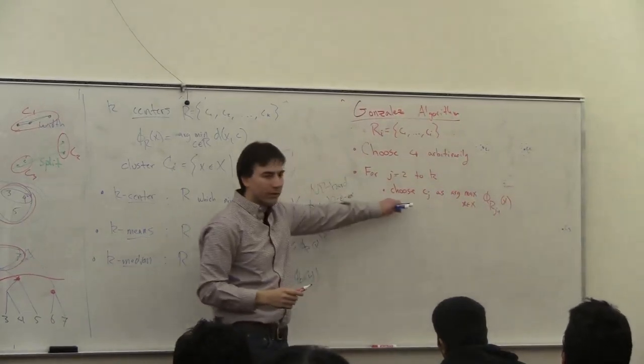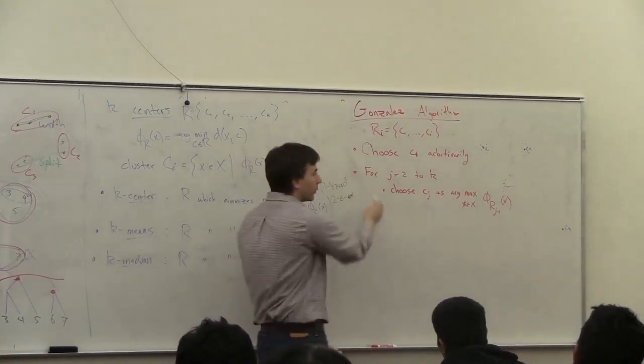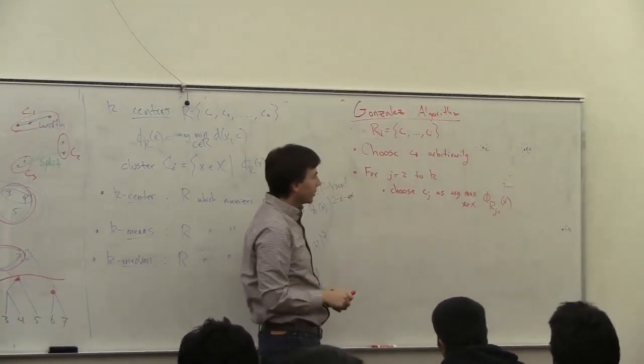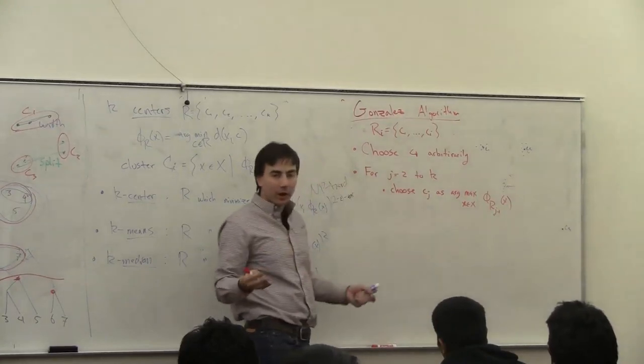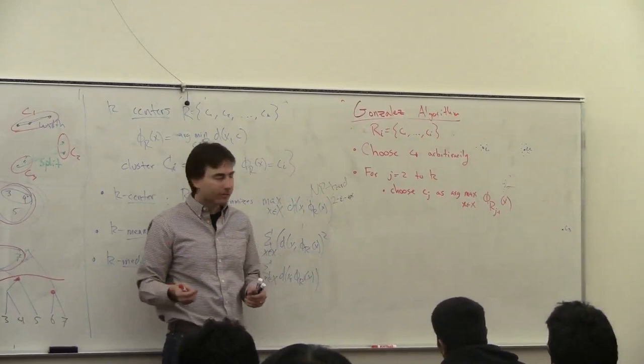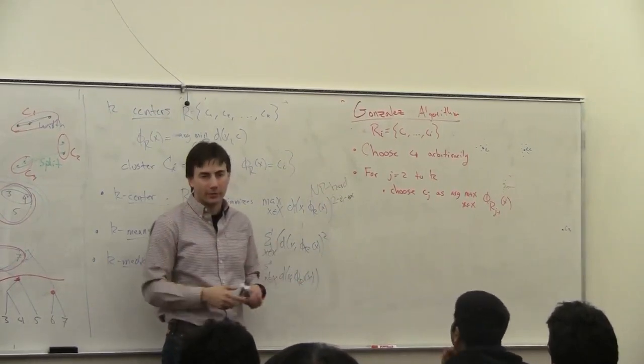So what does this mean? This is the full algorithm, by the way. You're choosing the center which is furthest away from any of the centers you already have. So you're building up these centers one by one, and you always pick the one which is furthest away from your set of centers you already have.